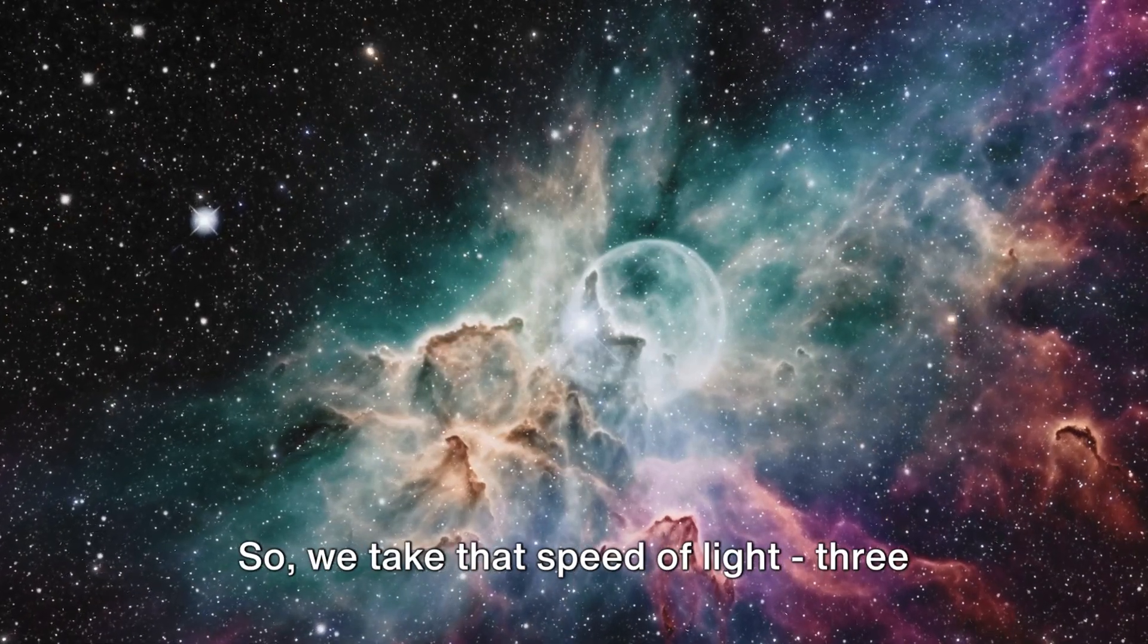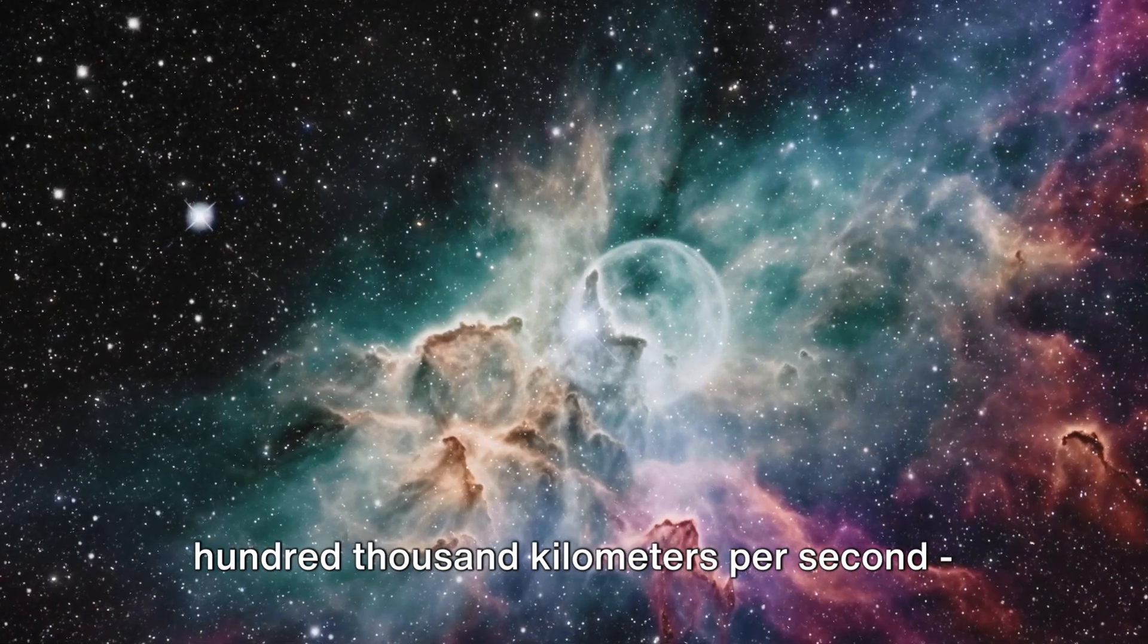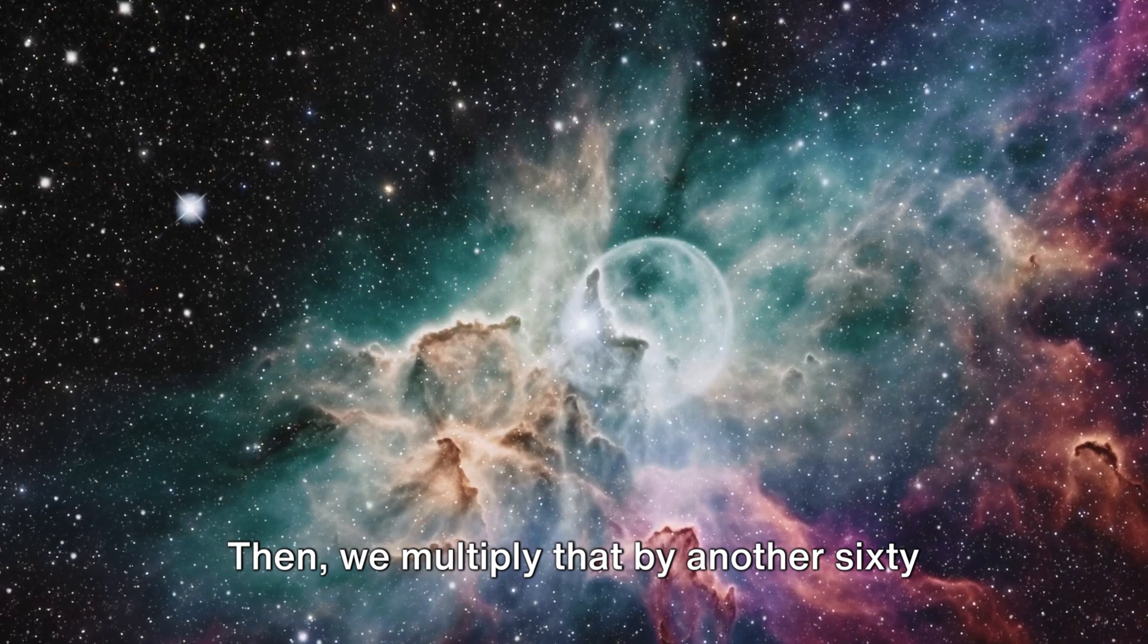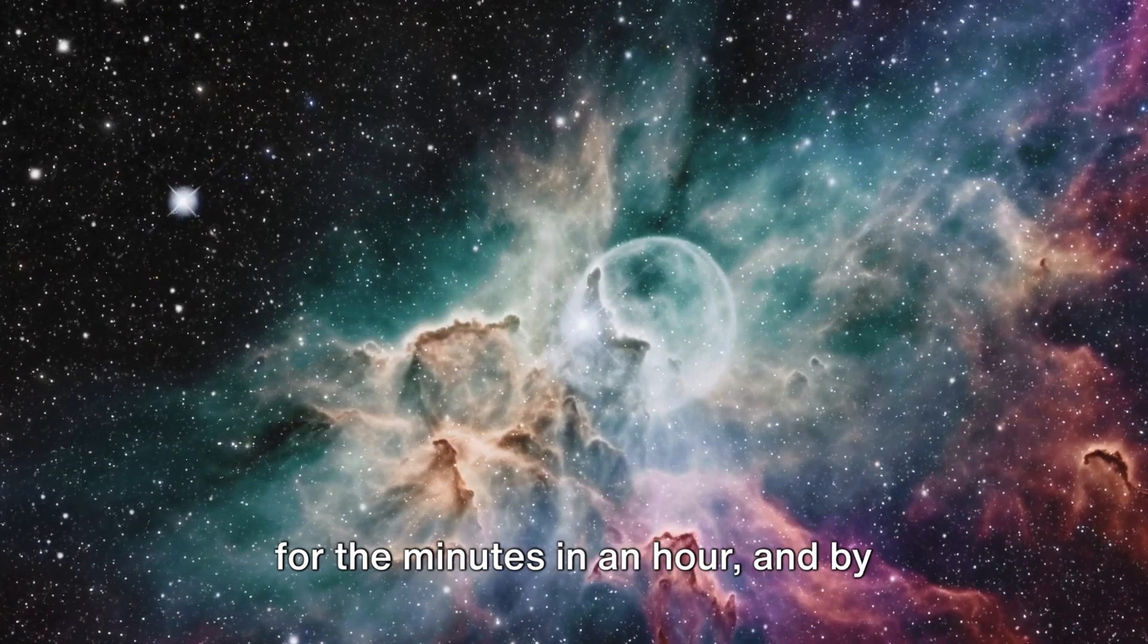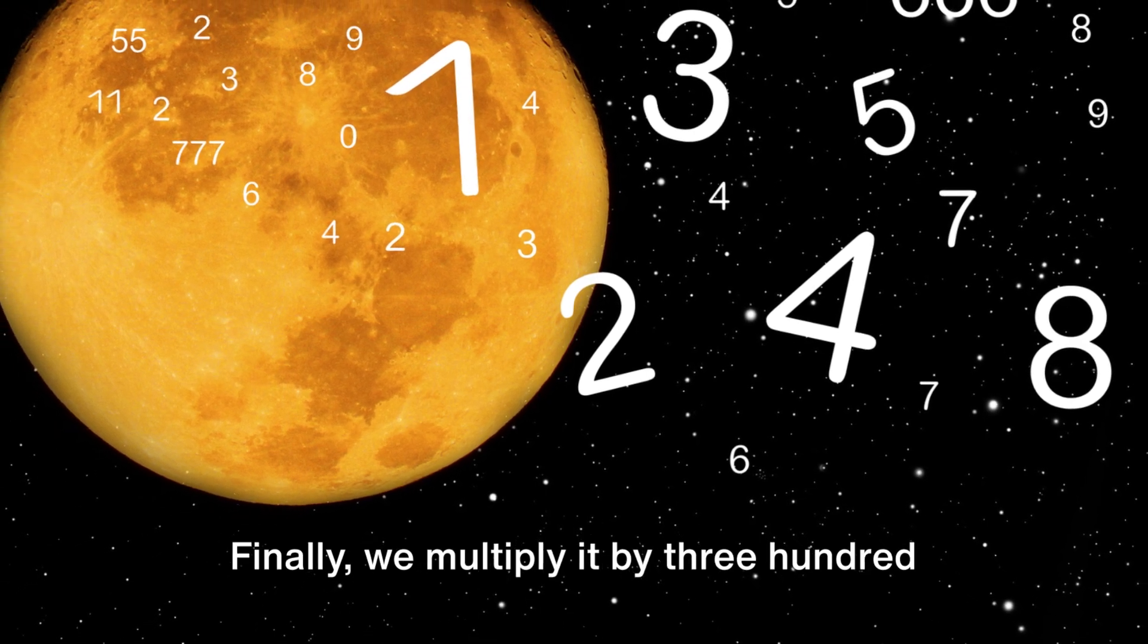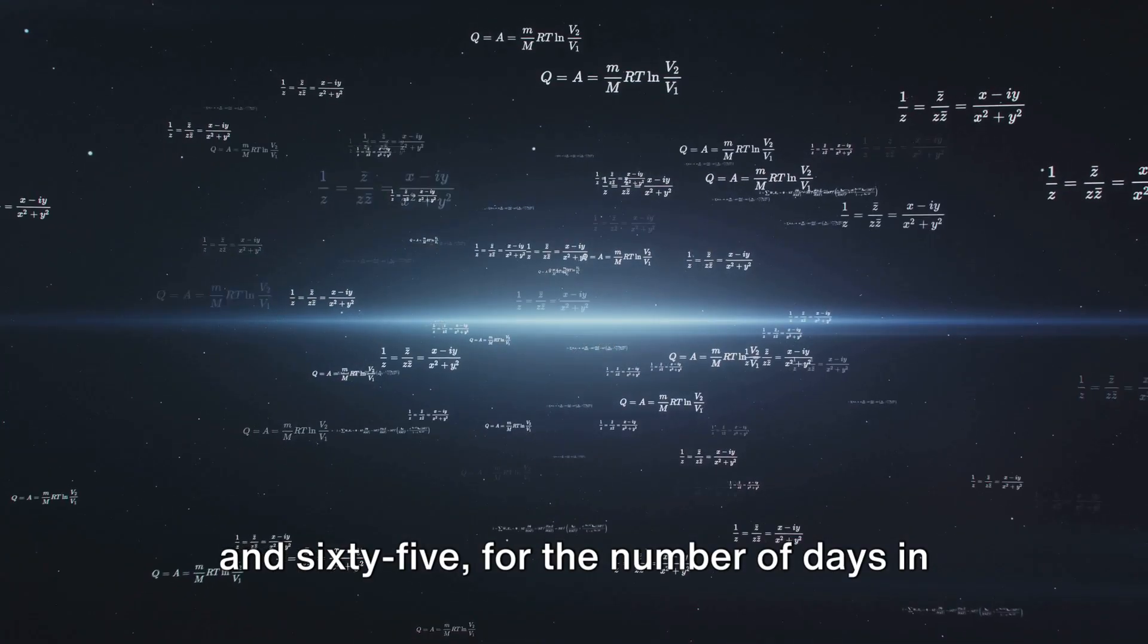So we take that speed of light, 300,000 kilometers per second, and multiply it by 60 seconds in a minute. Then, we multiply that by another 60 for the minutes in an hour, and by 24 for the hours in a day. Finally, we multiply it by 365 for the number of days in a year.